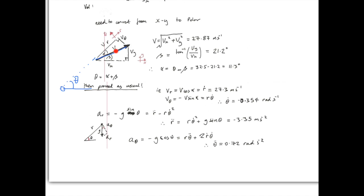So, from this, we can work out the contributions in the R and the Theta directions, as follows. So, for Vr, Vr is then V cos of Alpha. V cos of Alpha is Vr. And, Vr is equal to R dot. And, this is 27.3 meters per second.